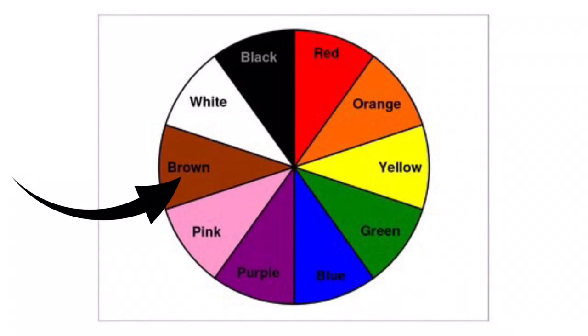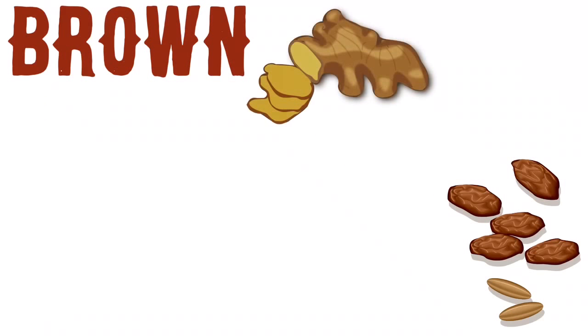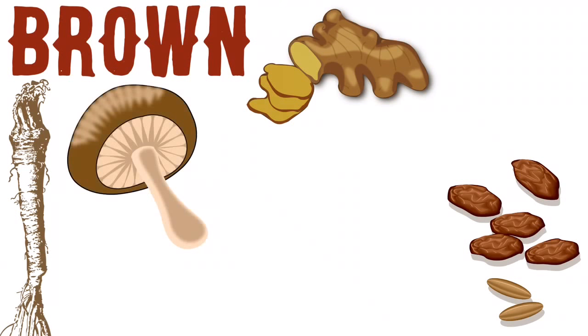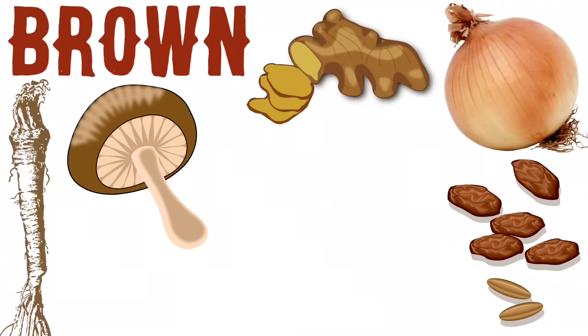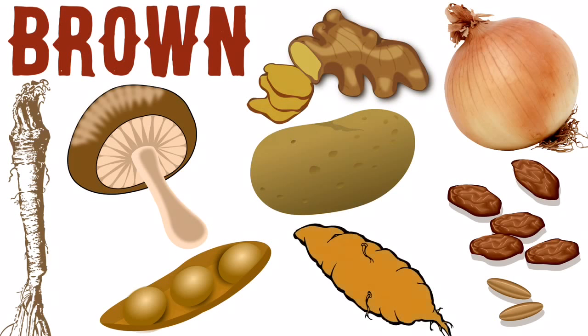This color is brown. Which fruits and vegetables are brown? Brown. Brown dates, ginger, horseradish, mushroom, onions, potato, soybeans, yams.